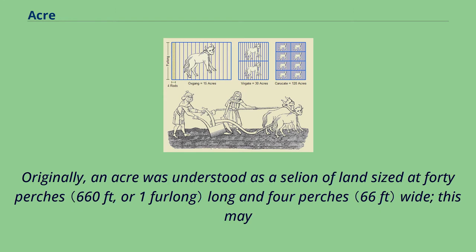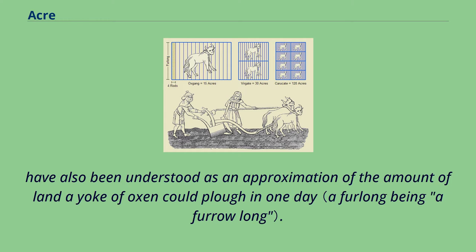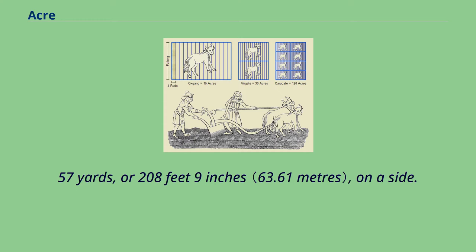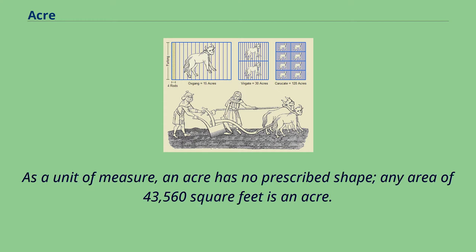Originally, an acre was understood as a selion of land sized at 40 perches long and 4 perches wide. This may have also been understood as an approximation of the amount of land a yoke of oxen could plow in one day. A square enclosing one acre is approximately 69.57 yards, or 208 feet 9 inches, on a side. As a unit of measure, an acre has no prescribed shape; any area of 43,560 square feet is an acre.